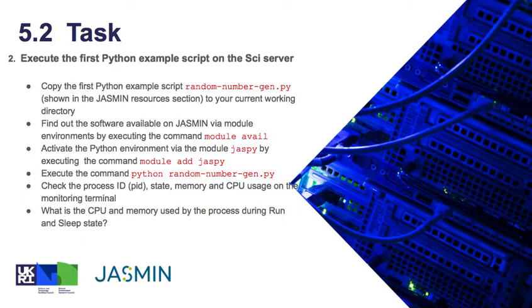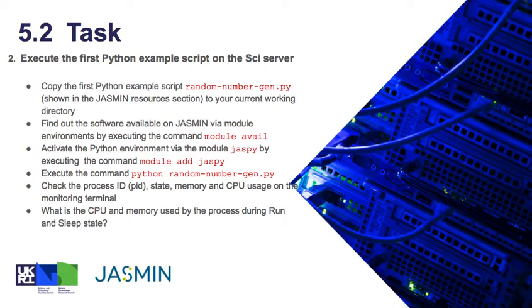The second task is to execute the first Python example script which is provided. You have to copy this script into your home directory, explore the available modules, activate the module JASP because we need this module to run this script, and then execute the Python script. On the monitoring window, check the PID, the state, the memory and CPU usage, and note those values.